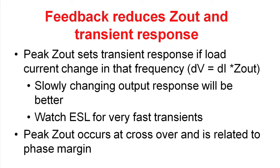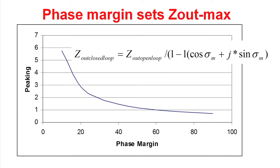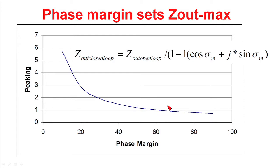Another thing that occurs in power supplies is peaking depending on your phase margin. If you calculate the closed loop output impedance, you see it's our open loop output impedance divided by 1 plus the real and imaginary parts of the loop gain. With a magnitude of 1, it depends on the relative amplitudes of these terms. If cosine equals 1, you get 1 minus 1 in the denominator — division by zero — giving a very high peak in output impedance. As you increase phase margin to something acceptable like 45 or 60 degrees, there's very little impact from output filter peaking.